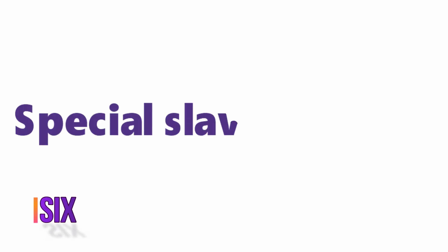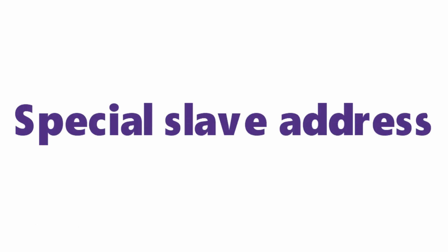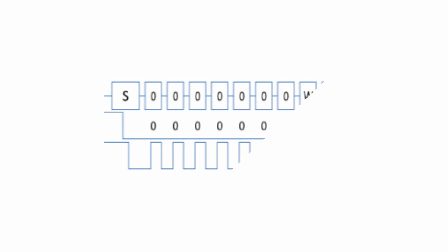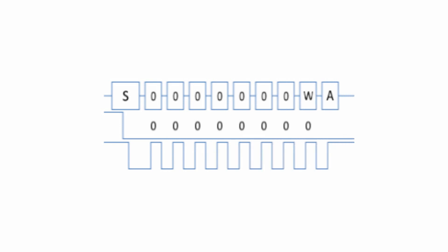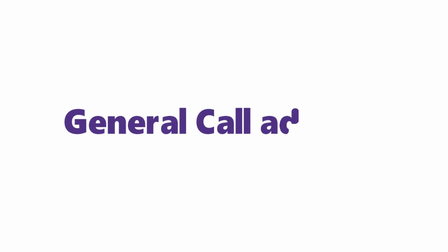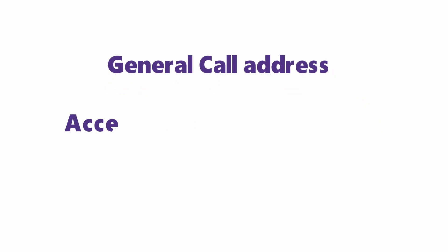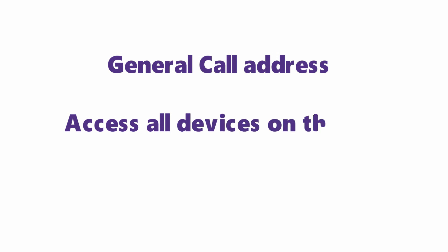The sixth secret is the special slave address. When all the bits in the slave address are zero and the read/write bit is also zero, it is called the general call address. It is used to access all devices on the bus that support this general call feature.